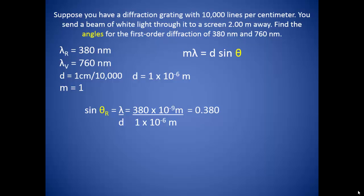Using our equation then, we find the sine of theta equal to 0.380. And if we take the inverse sine of 0.380, we find an angle of 22.33 degrees for the first order of diffraction of red light.